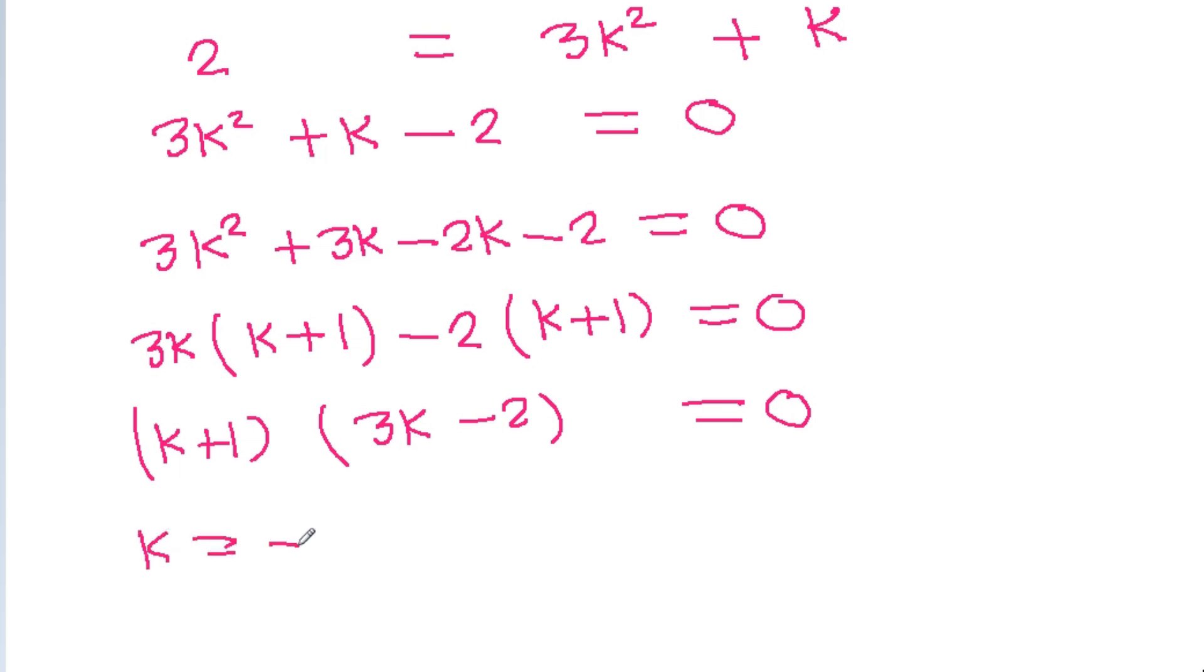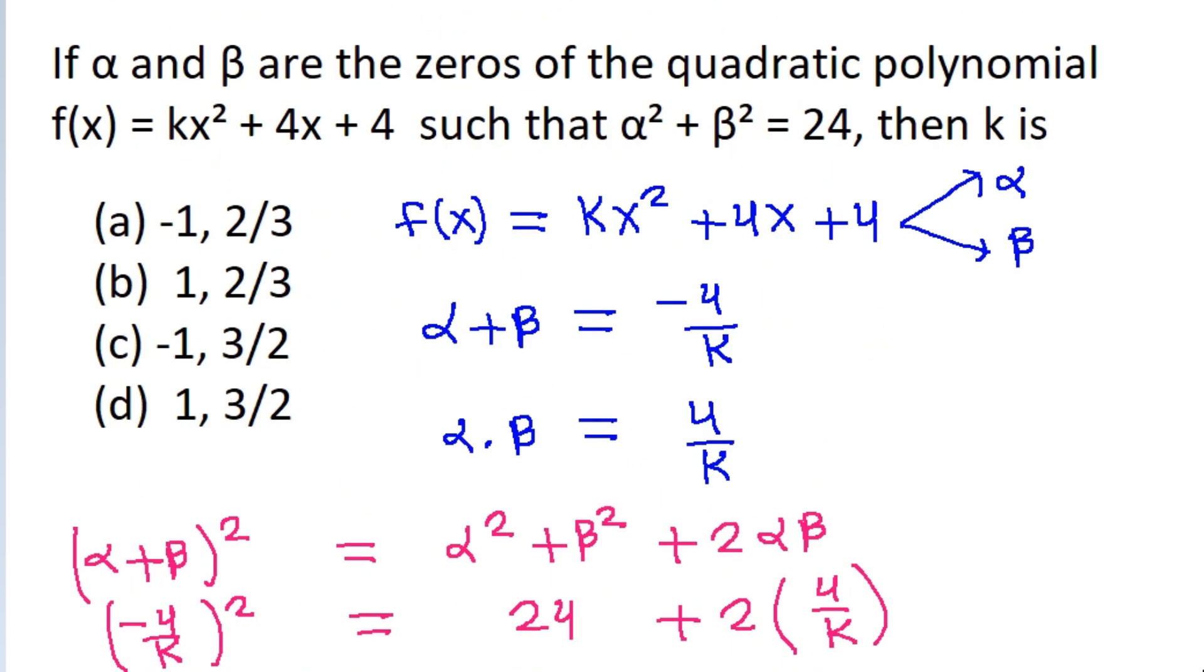So k equals -1 and k equals 2/3. Therefore, the correct option is option A.